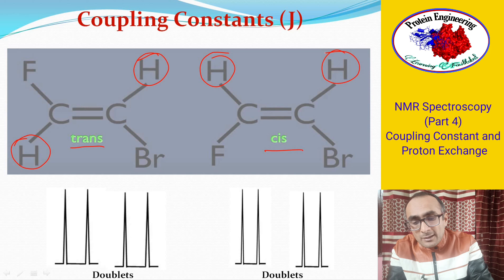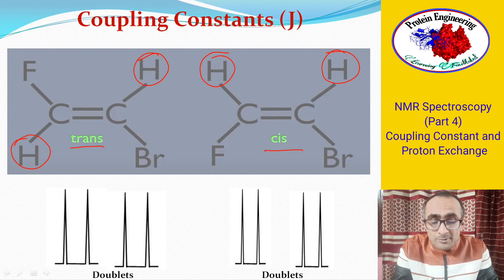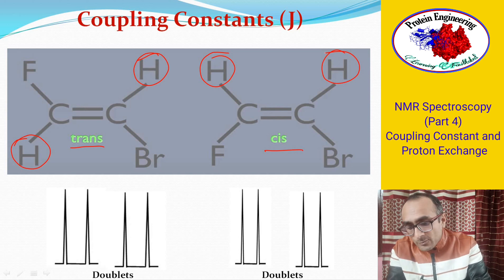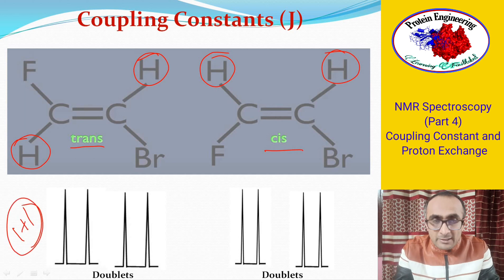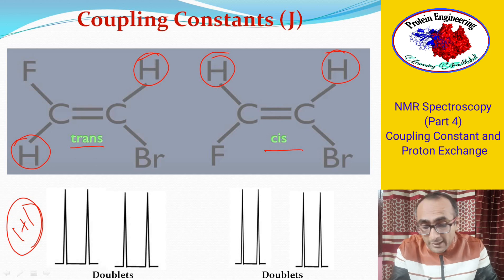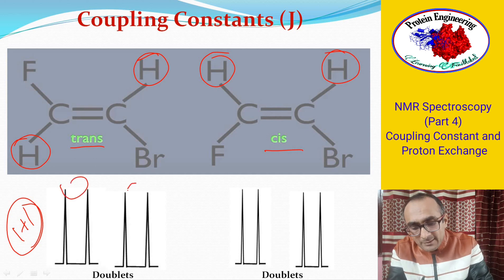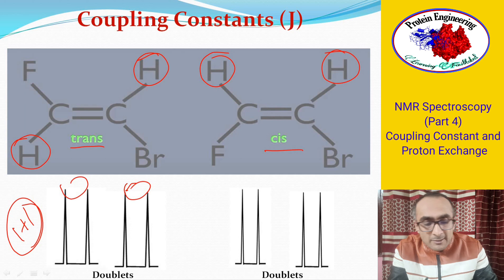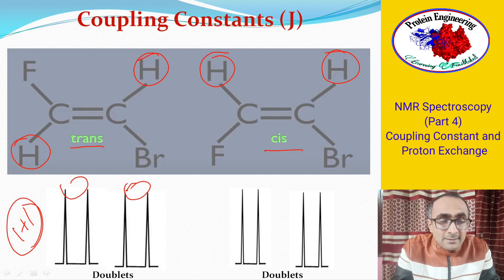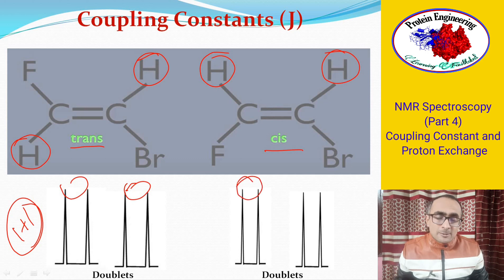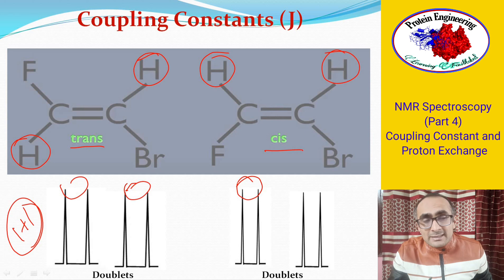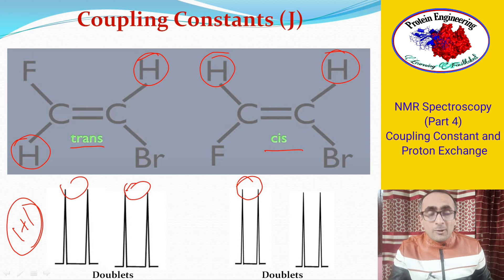Why a doublet? Because in the neighborhood of each of these protons there is one proton. As per the N+1 rule, 1+1 gives a doublet in each case. In trans configuration you get a doublet at each peak, and in cis configuration you also get two peaks each of which is a doublet. So just by looking at the peak split you cannot differentiate between cis and trans configuration of a compound.